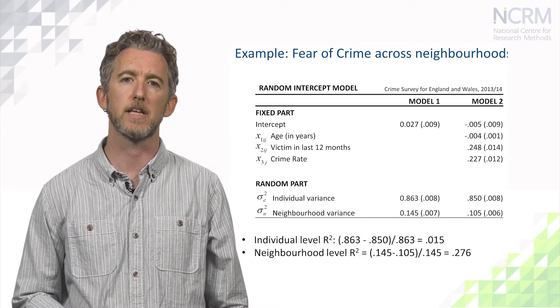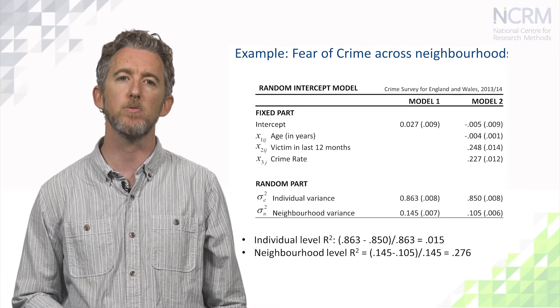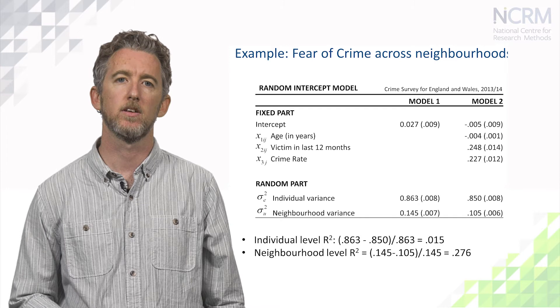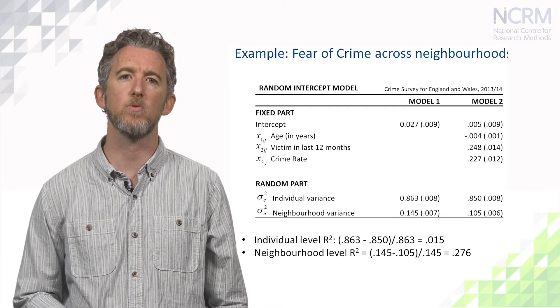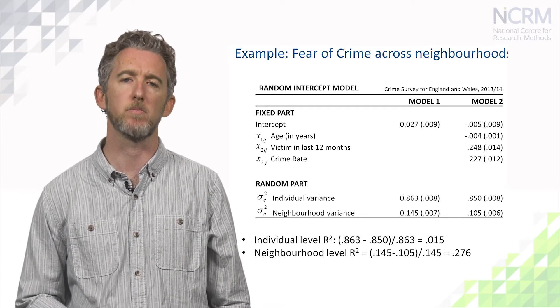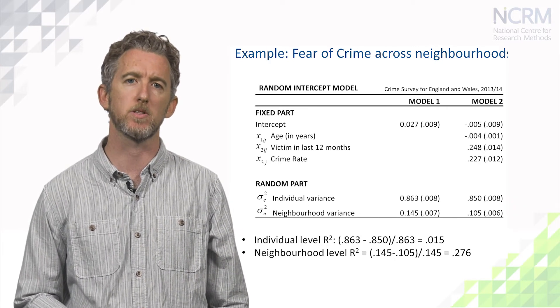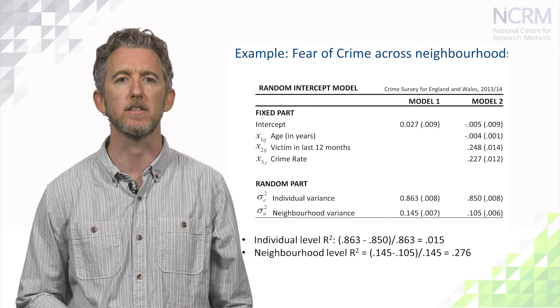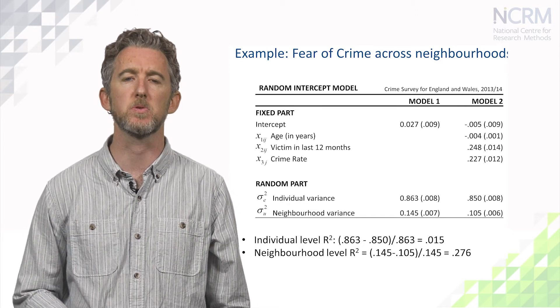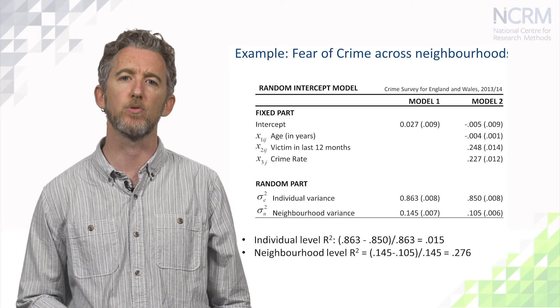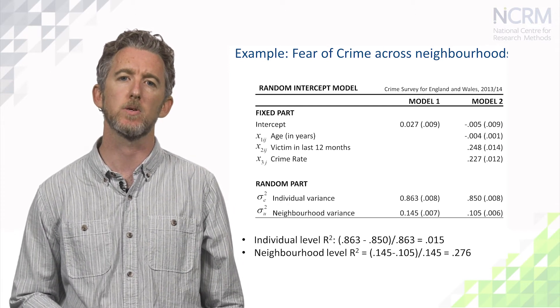This can be seen because of the ij subscripts. The final variable, neighbourhood crime rate, is measured at the group level, with only a subscript j. Here we see generally lower levels of fear amongst older residents, and notably higher levels of fear amongst victims of crime, when compared to non-victims. We also see that residents of areas that have a higher crime rate are generally more fearful than residents in areas with lower crime rates.